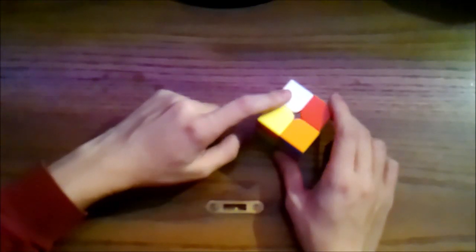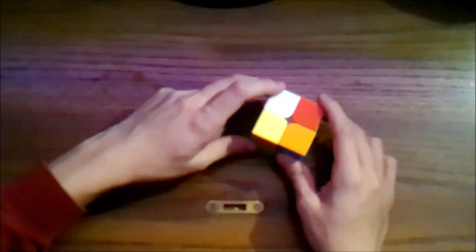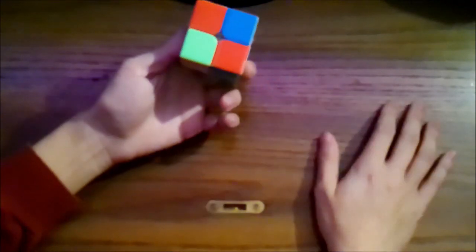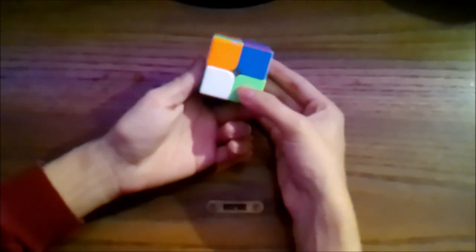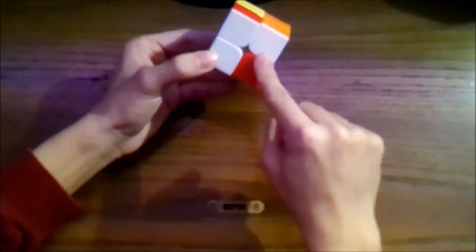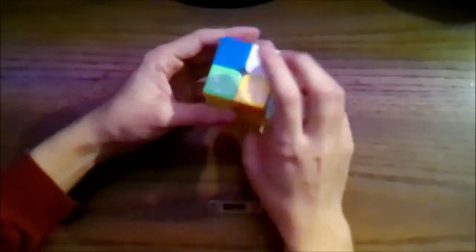In this step, you'll want to find the white stickers that are on the corners of the cube and move them into their correct positions. To do this, you'll need to twist the side of the cube until the white stickers are in the correct position. Remember, the goal is to have all 4 stickers on each side of the cube match in color.